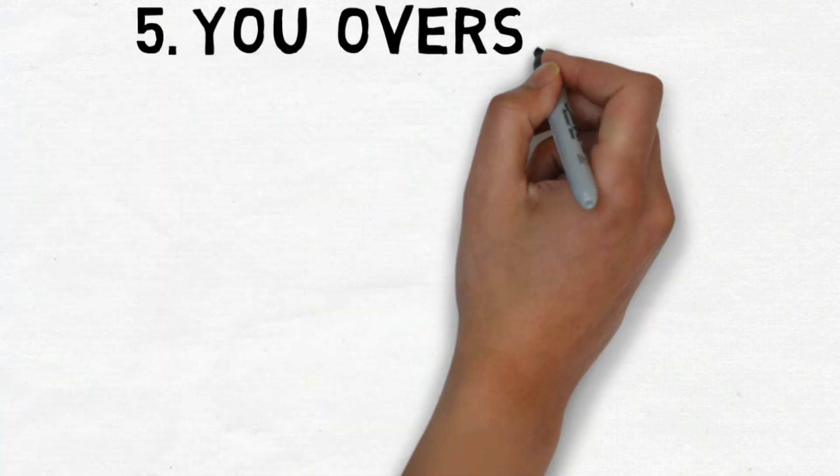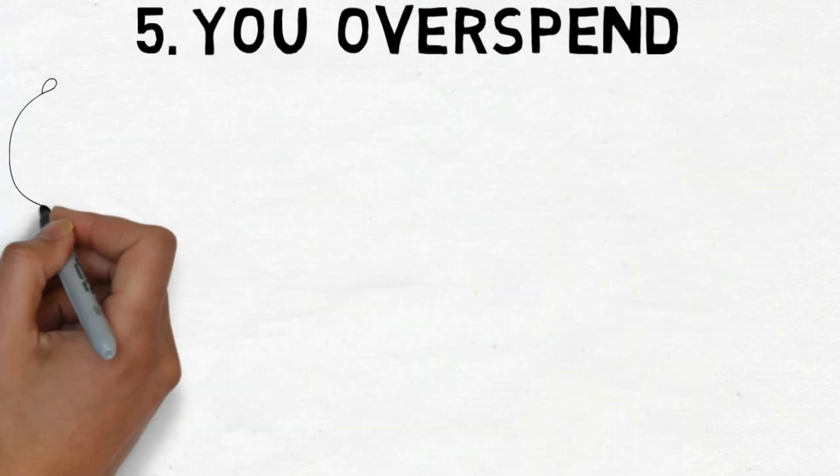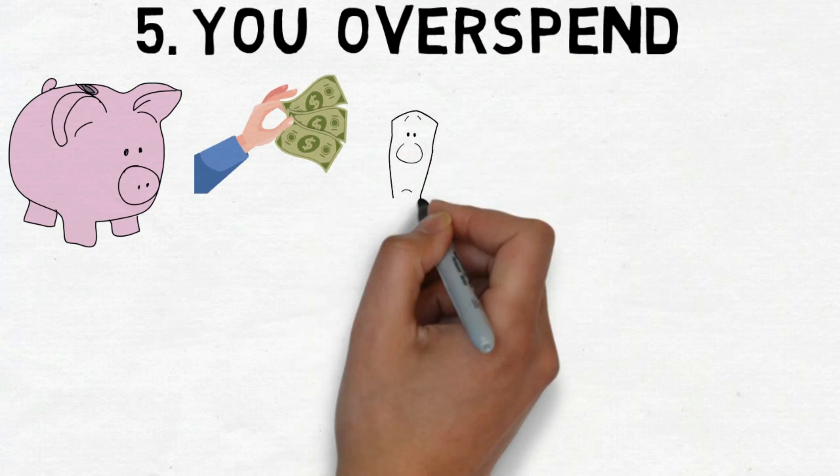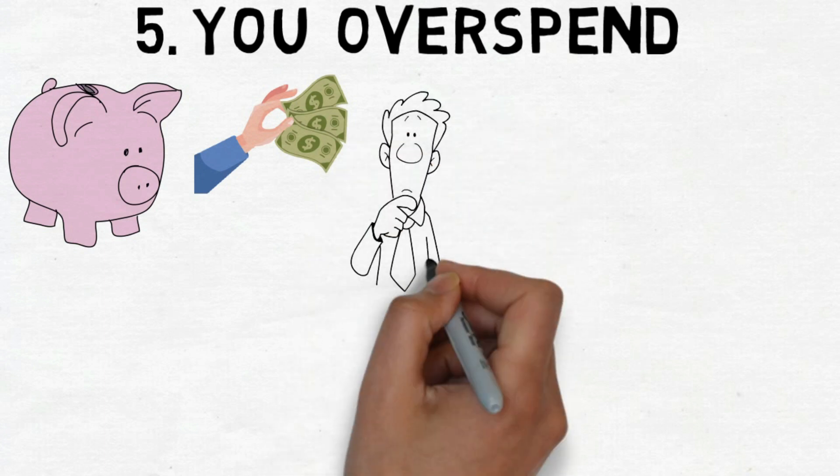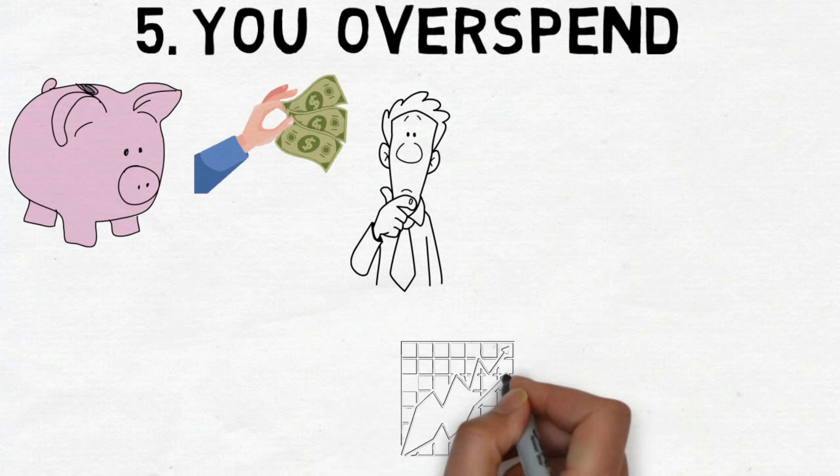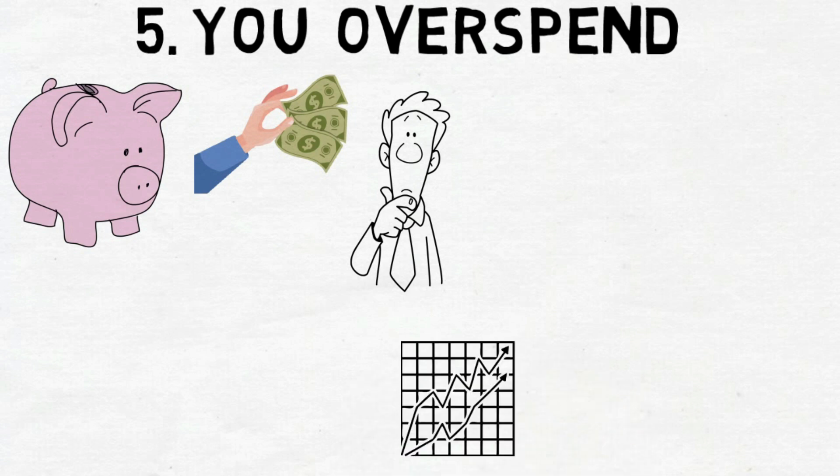Number 5. You Overspend. Growing rich involves saving money, but if you spend more than you earn, getting rich becomes difficult. Sadly, many think making more money will solve their savings issue. But what usually happens is that when income goes up, spending also goes up.